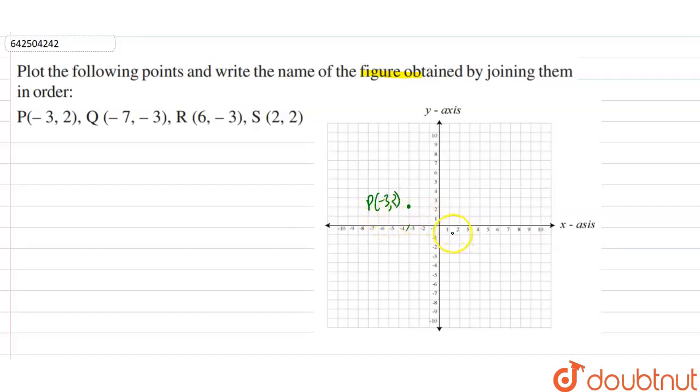Then point Q is minus 7 comma minus 3. So, minus 7 here and minus 3 is down to the origin. Minus 7 comma minus 3 is here. This is Q minus 7 comma minus 3.